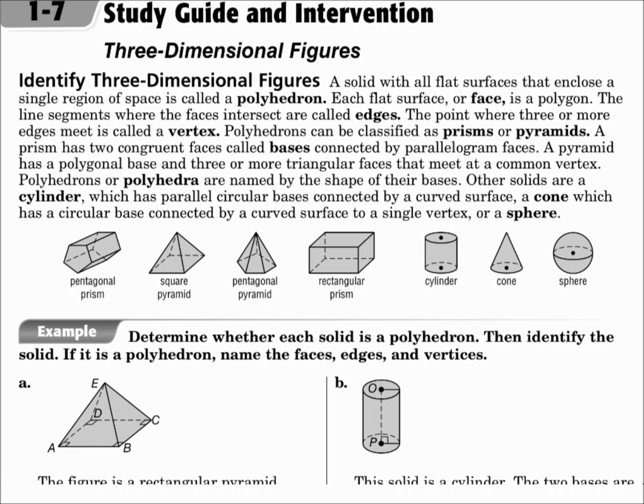Notice the solids. The prisms, the pentagonal prism and the rectangular prism, have bases and they're wrapped around with rectangles. The pyramids have bases wrapped with triangles. These three all have curves somewhere, so they're a little bit different from the others. The cylinder, cone, and sphere.